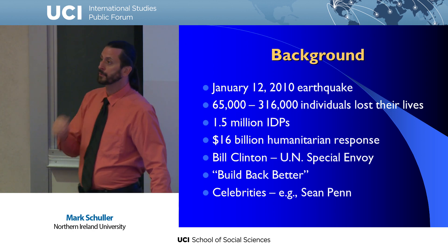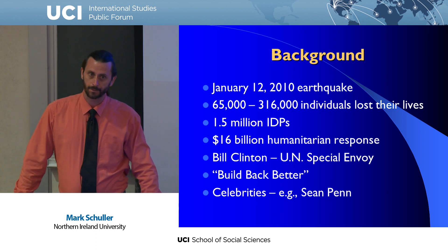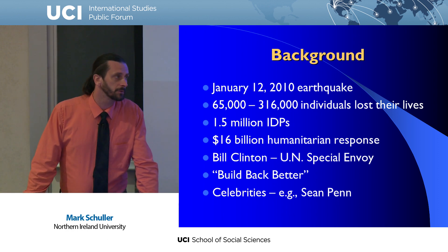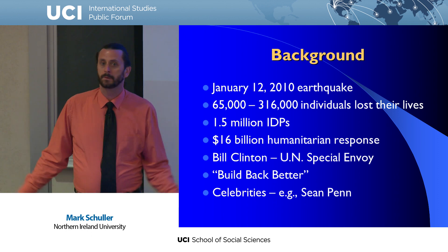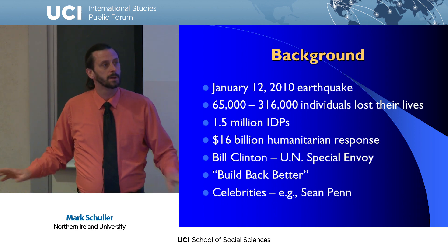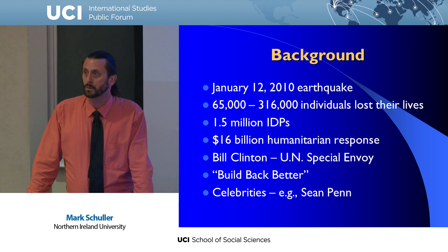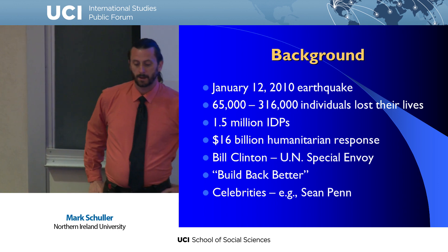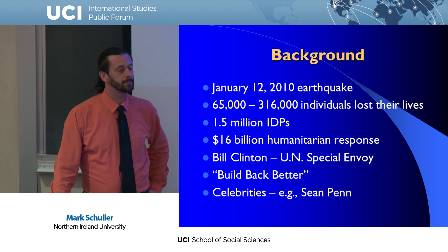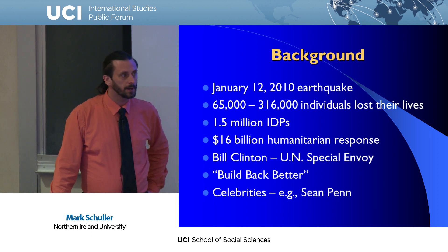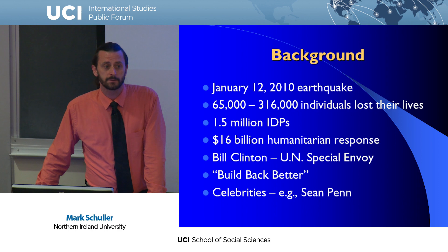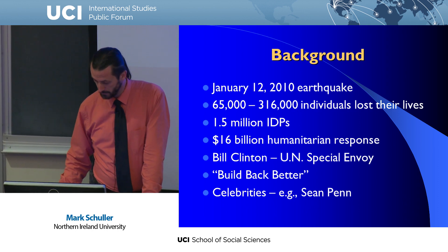Bill Clinton's slogan for the earthquake response was 'build back better,' using Chicago's fire recovery and the 1906 San Francisco earthquake as examples of rebuilding into a better city. The earthquake response brought celebrities including Sean Penn, who created an NGO called the JPHRO; George Clooney did a telethon; Scarlett Johansson sold a handbag; and the Hooters girls went to Haiti. There was a lot of attention on this earthquake and the humanitarian response.